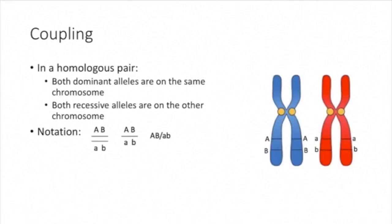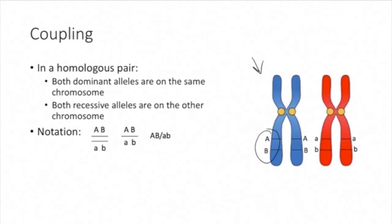First we're going to talk about coupling. The heterozygote's linked genes are considered to be in coupling when both of the dominant alleles are on one homologous chromosome, and both of the recessive alleles are on the other homologous chromosome. So linked genes in coupling will look something like this when viewing a homologous chromosome pair. You have big A and big B on one homologous chromosome, and little a and little b on the other. The reason there are two is because these are sister chromatids that have been duplicated. These are the different types of notations you can use when describing linked genes that are in coupling.